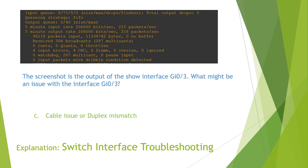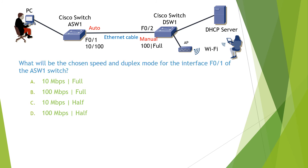Switch interface troubleshooting. The question reads: what will be the chosen speed and duplex modes for the interface F01 of the ASW1 switch? We see that interface F01 has auto settings, and the interface that connects to it — F02 — has manual settings with speed set to 100 Mbps and full duplex mode. In this case, Cisco switch ASW1 will sync the speed of F02 and set the speed of F01 to 100 Mbps and duplex mode to half. So the answer for this question is D.